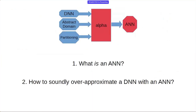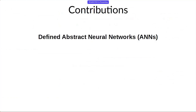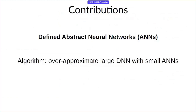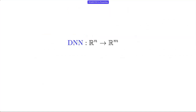Our focus is only on how to go from a neural network to an ANN. We're not going to talk about the verifier. We're going to prove that this is a sound ANN, but not how to do the verification. The contributions are: defining abstract neural networks, giving the operational algorithm for over-approximating a large DNN, and giving necessary and sufficient conditions for that to be sound.